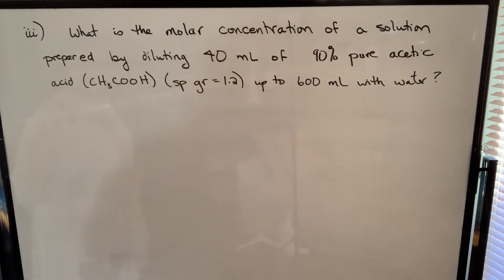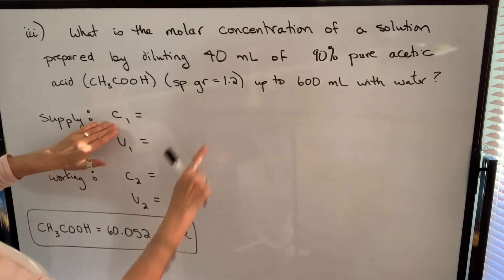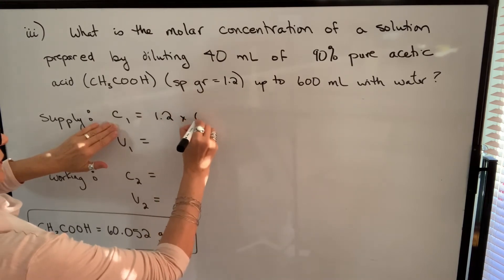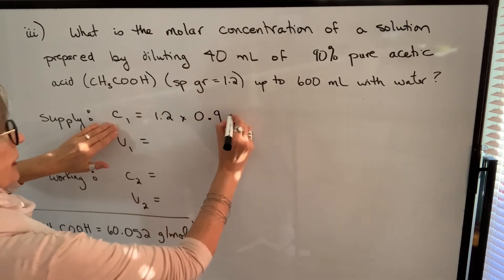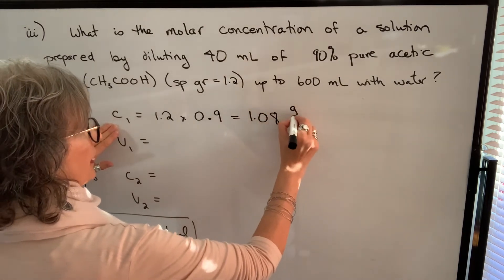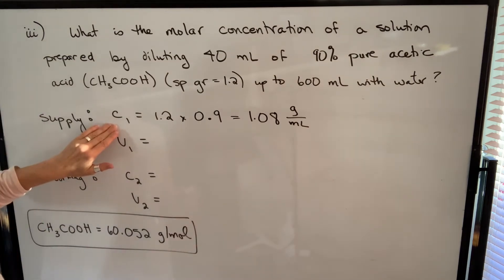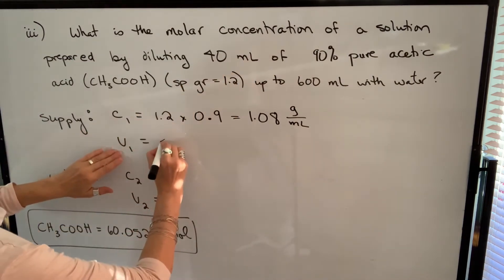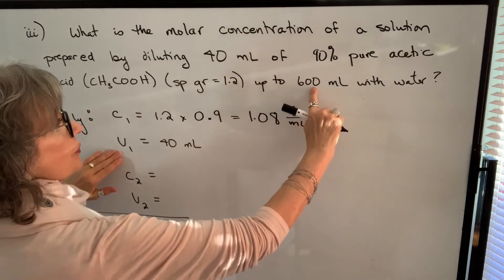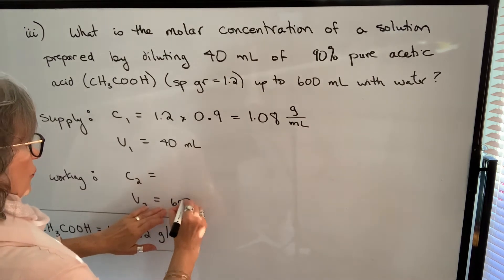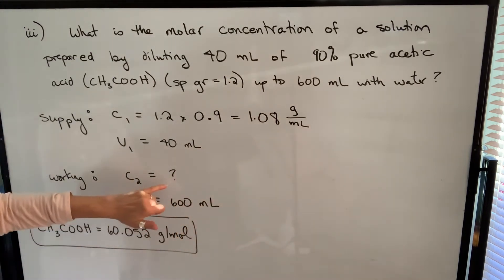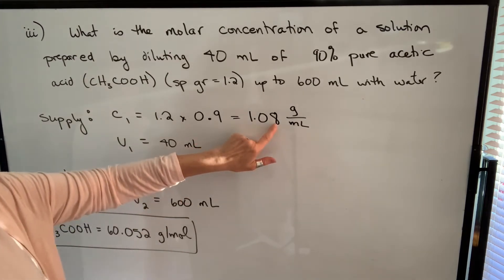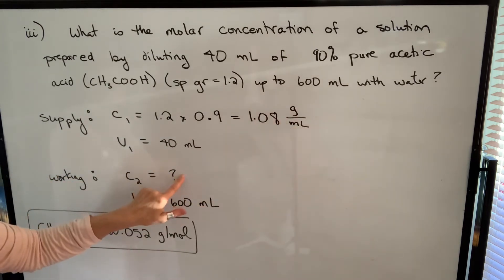The next example asks us to find the molar concentration of a solution prepared by diluting 40 milliliters of 90% pure acetic acid with a specific gravity of 1.2, up to 600 milliliters with water. For the supply solution: specific gravity 1.2 multiplied by 0.9 purity gives 1.08 grams per milliliter. We're taking 40 milliliters of that and diluting to 600 milliliters. The concentration of the working solution is unknown.